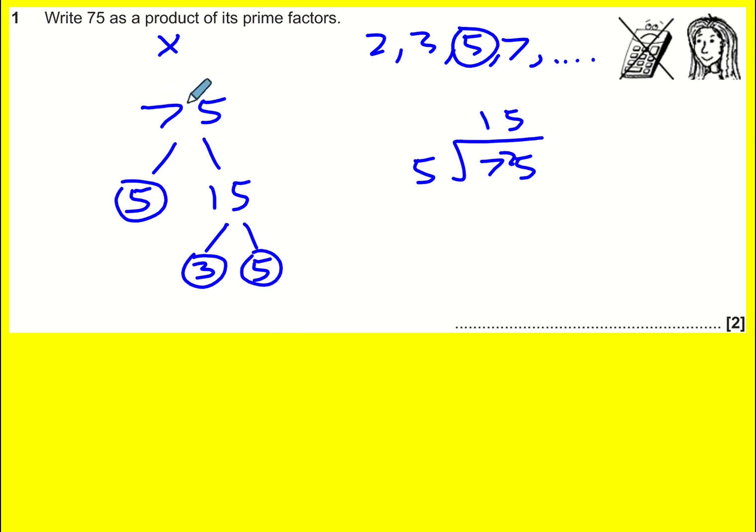We've managed to split up 75 into its simplest parts in some ways that it is prime factors, and our final answer is 3 times 5 times 5.